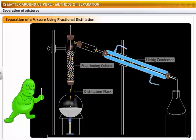A simple fractioning column is made up of a tube packed with glass beads. The beads provide the surface for the vapors to cool and condense again and again. The fractioning columns obstruct the smooth upward flow of vapors.